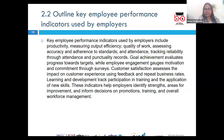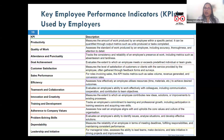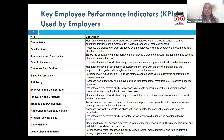Productivity measures the amount of work completed by an employee relative to expectations or targets, such as number of tasks completed, sales volume, or projects managed. Quality of work assesses the accuracy, thoroughness, and overall quality of the employee's output, including error rates, adherence to standards, and client satisfaction.